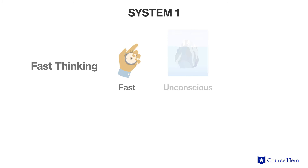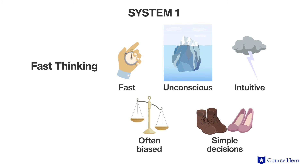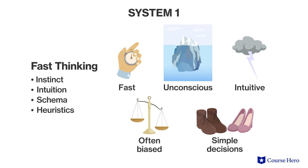These two styles of thinking can be further described as being part of two systems. During fast thinking — system one thinking — the mind makes use of instinct, intuition, schemas, and heuristics to reach rapid conclusions. For example, a pedestrian seeing a car careening down the street and diving out of the way.